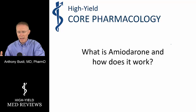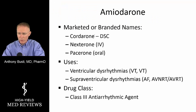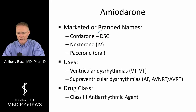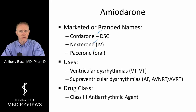What is amiodarone and how does it work? You might recognize the brand names of amiodarone — Cordarone historically, though that formulation has been discontinued. We have an IV formulation, Nexterone, and an oral formulation called Pacerone. We typically see these being used for various ventricular dysrhythmias including V-tach and V-fib, and then supraventricular dysrhythmias and commonly atrial fibrillation.